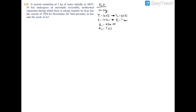Defining the entropy change equation: S2 minus S1 equals the integral from 1 to 2 of δQ divided by T. In this case δQ is the heat transfer at the system boundary during the process, and since we just have a simple process from 1 to 2, δQ simplifies to Q. The T is the absolute temperature at the boundary. So we have: S2 minus S1 equals Q divided by T.